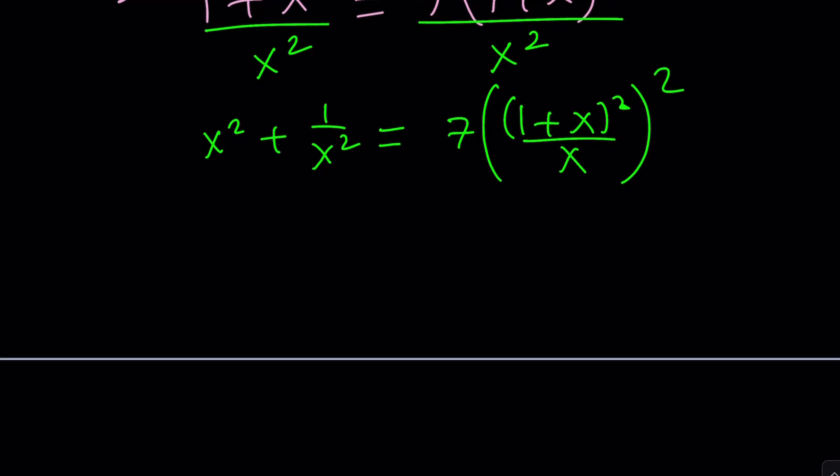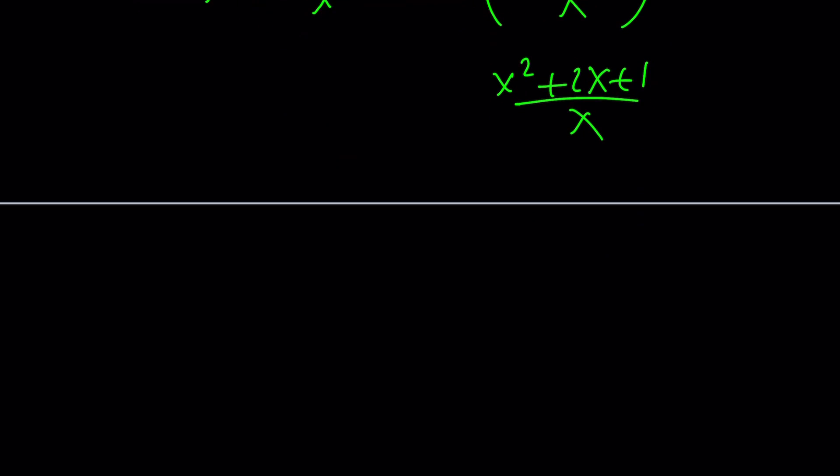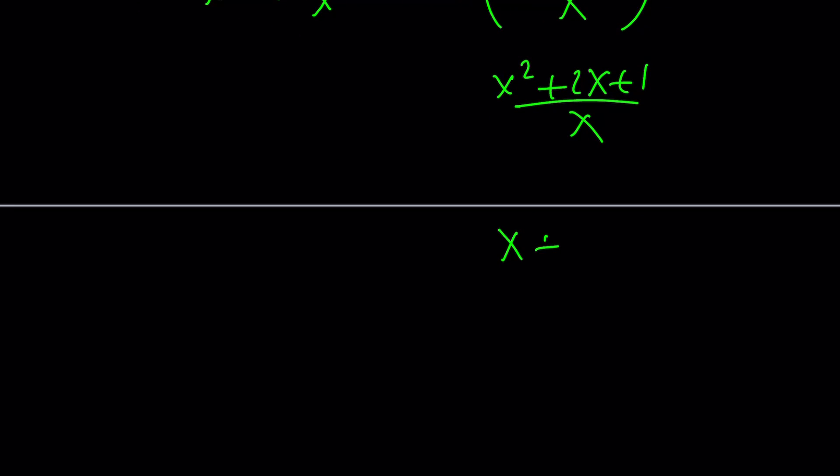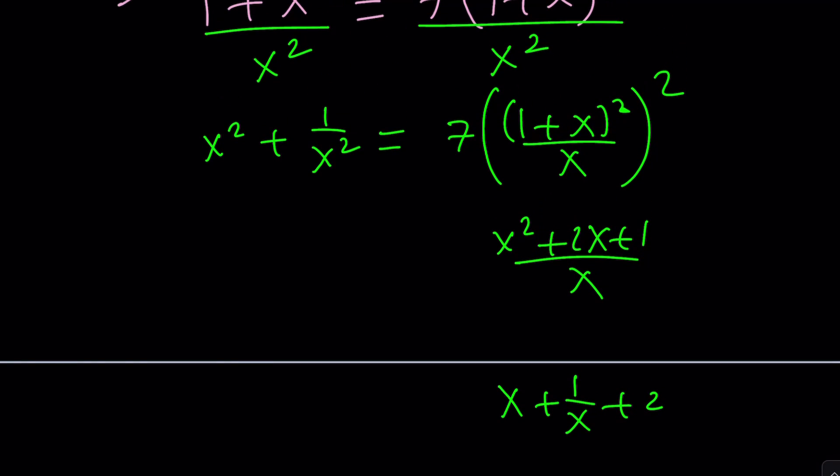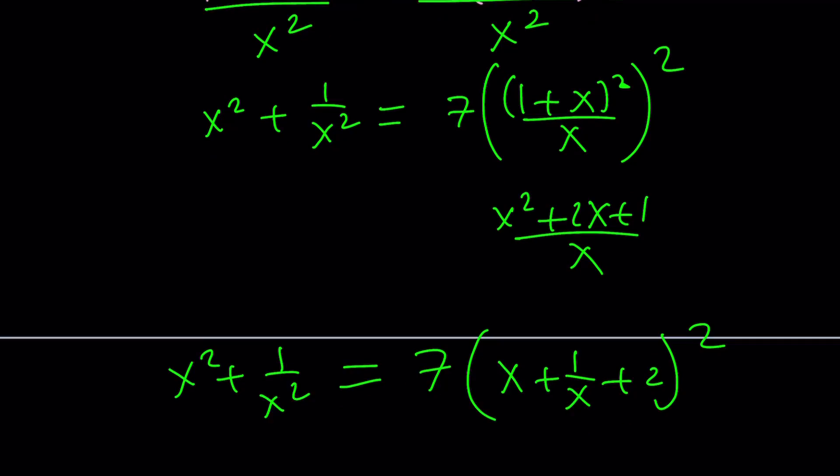And that's the best part because x squared plus 2x plus 1 divided by x is going to give you x plus 1 over x plus 2. But remember that is squared and multiply by 7 and then that becomes equal to x squared plus 1 over x squared. So, this is what happens after dividing both sides and arranging the terms.